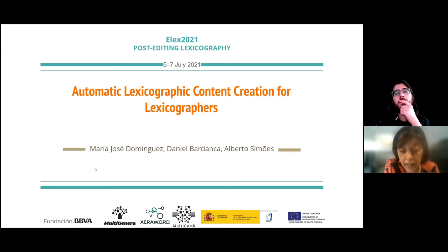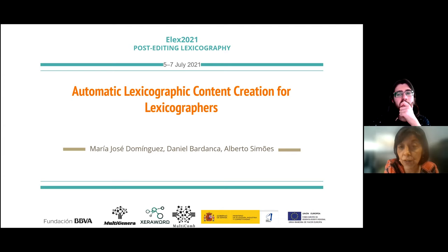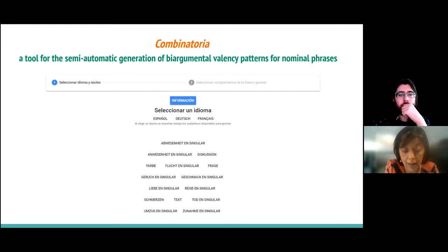Today, we advance the results of our first prototypes for semi-automatic generation of mono-argumental and bi-argumental valency patterns, with a focus on the nominal phrase. The aim of the study is to present the tool Combinatoria, a new prototype for automatic generation of bi-argumental valency patterns for the nominal phrase in Spanish, German, and French, as well as the current developments of our simulators.